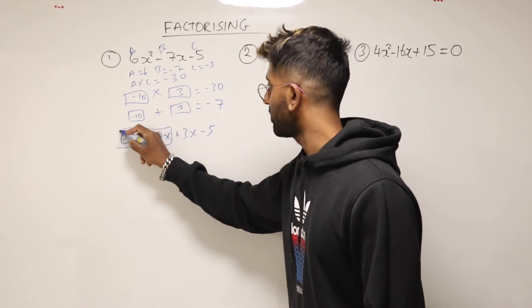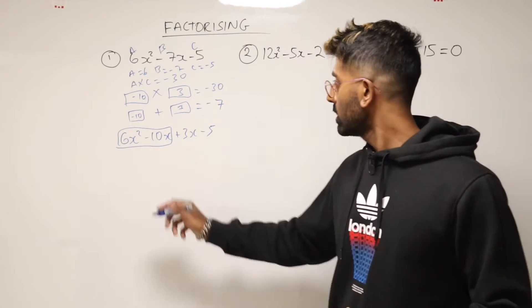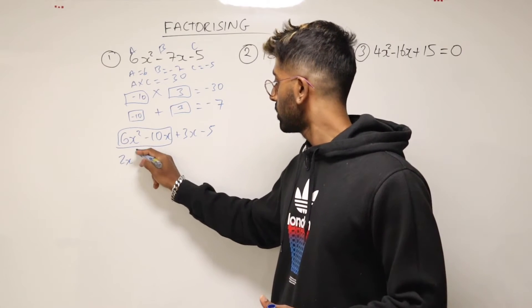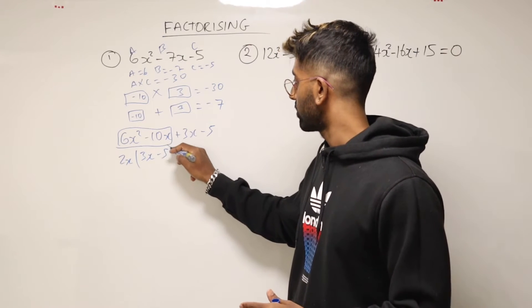Next thing to do is start factorizing this part here. So what's the most you can take out of 6x squared minus 10x? I think that's 2x. And so we'll be left with 3x minus 5.